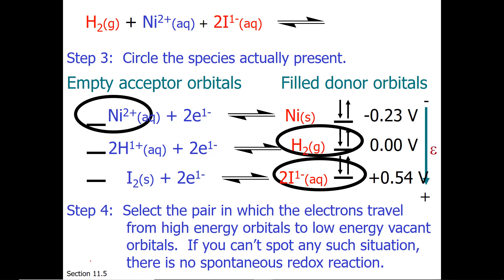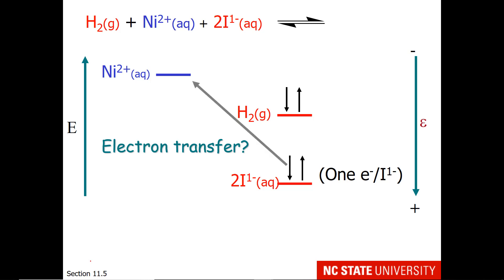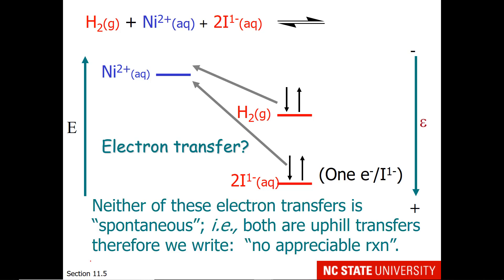Now we need to select the pair in which electrons travel from high-energy orbitals to low-energy vacant orbitals. If you can't spot any such situation, there is no spontaneous redox reaction. Will there be electron transfer between iodide-1- and Ni-2+? Not spontaneous — electrons don't want to jump up to higher-energy orbitals farther from the nucleus. Hydrogen's electrons also do not want to jump further away. Both are uphill transfers.